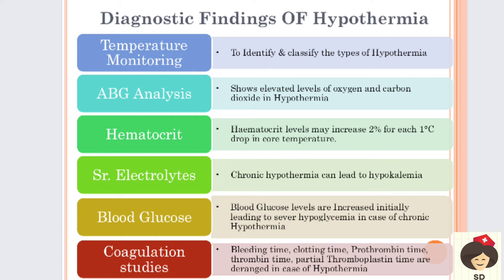Regarding diagnostic findings in hypothermia: temperature monitoring helps identify the patient's temperature and classify the stage of hypothermia - mild, moderate, or severe. ABG analysis - arterial blood gas analysis - takes arterial blood to find pH, partial pressure of oxygen, and carbon dioxide. These will be elevated due to increased concentration of blood from vasoconstriction. Hematocrit also shows blood concentration - there will be a 2% increase in hematocrit for every 1 degree Celsius drop in body temperature.